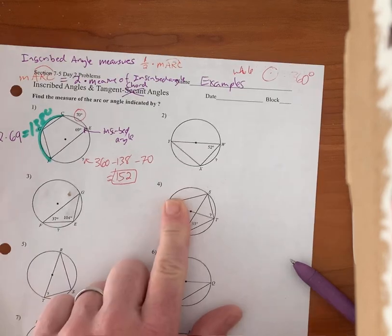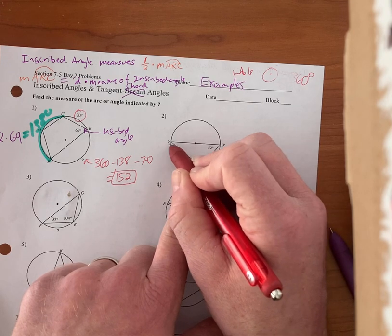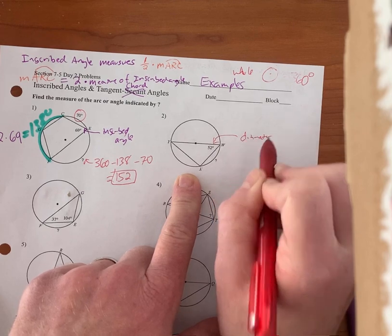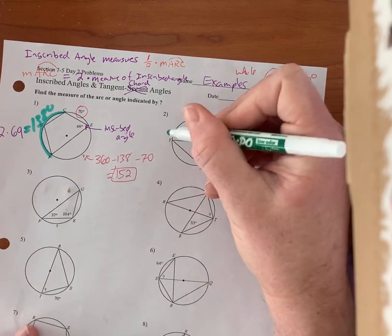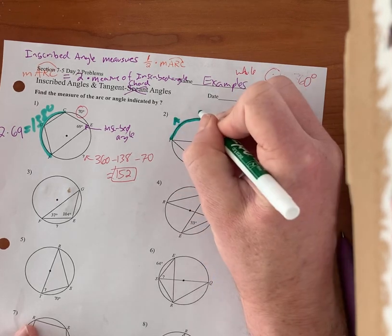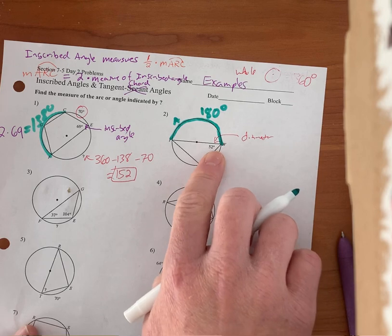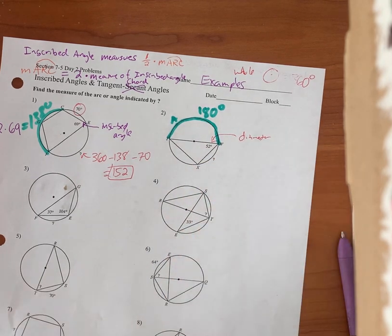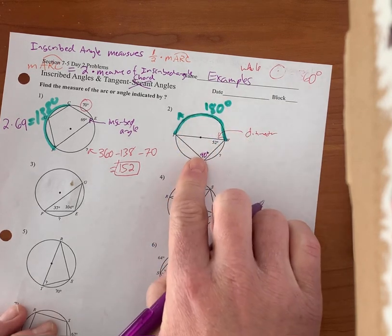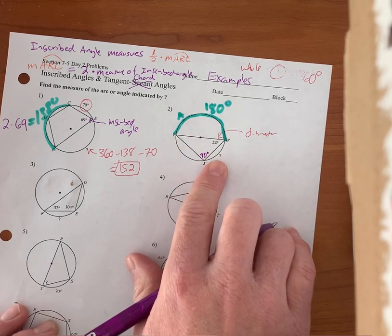We got angle X inscribed in a semicircle. I know this is a semicircle because this is the center of the circle, so WY is a diameter. The intercepted arc — semicircle YAW — any semicircle is going to measure 180 degrees, so angle X is going to be 90 degrees. Angle W is 52. Anytime I have an angle inscribed in a semicircle, that angle is going to be 90 degrees. There are a lot of different moving parts in this puzzle.